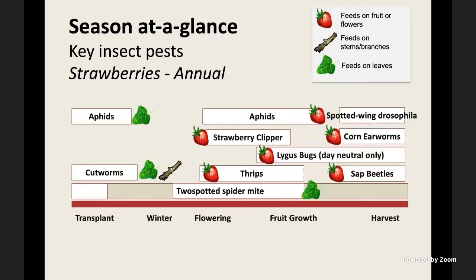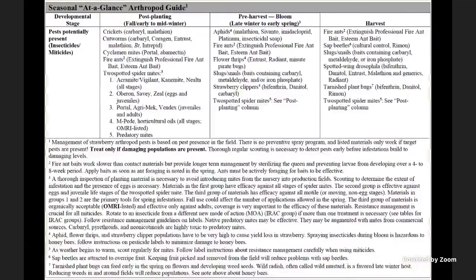When we look at management of those pests at a season-at-a-glance level, starting with post-planting fall to early to mid-winter: crickets are important and we have a couple of spray options; cutworms and cyclamen mites — we have some miticide options; fire ants — we can use baits. This screen comes directly from the Southeast Small Fruit Consortium strawberry IPM guide, updated every year by researchers from the region. It is one of the best resources for pest and disease management for strawberries.